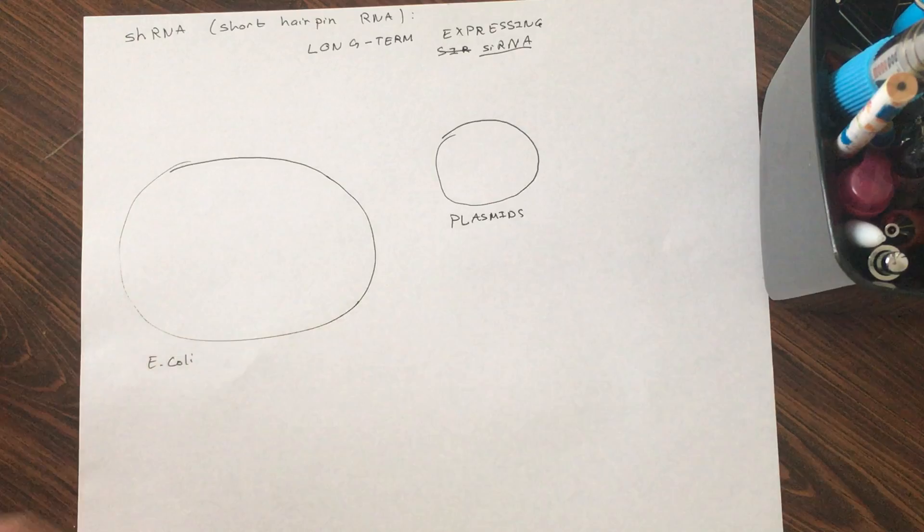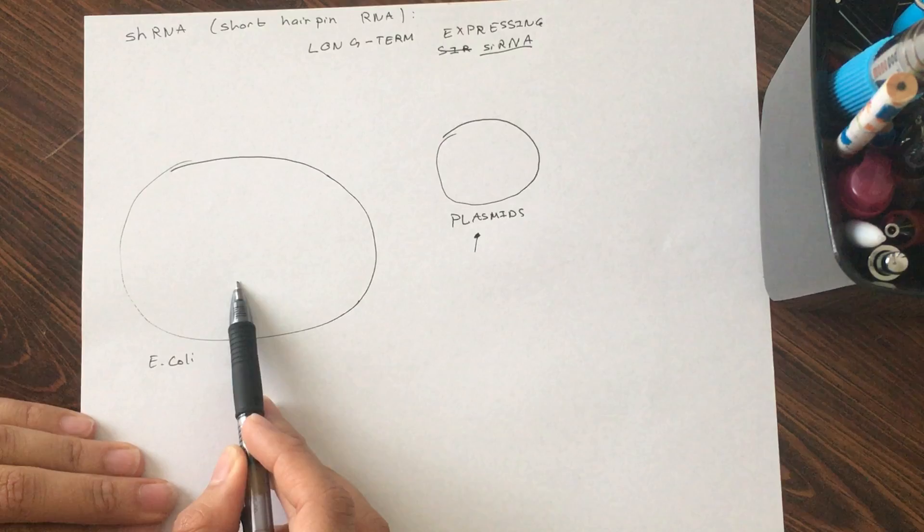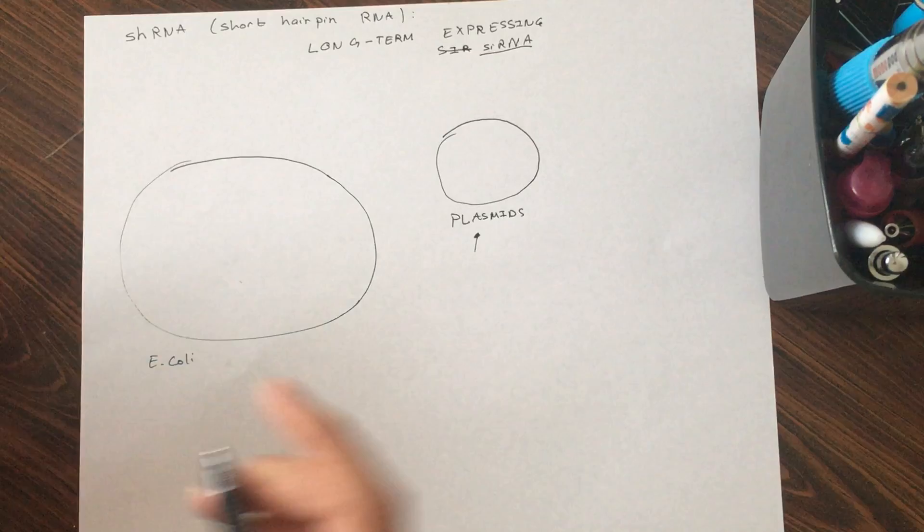What plasmids are is basically extra genetic material the bacteria doesn't really need, but in times of need when the environment changes, the plasmid can actually go into the genetic area of the E. coli cell and be transcribed and translated into proteins. So what researchers do is they modify these plasmids. If you can modify plasmids, you can modify the genetic material of the E. coli since E. coli use plasmids.